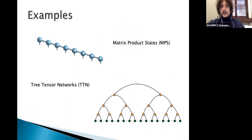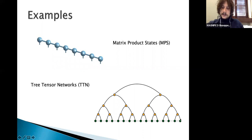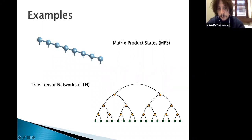A possible generalization is the tree tensor network (TTN), where you construct a binary tree on top of your physical lattice by connecting two nearest-neighbor sites to a layer of top tensors, then connecting that layer to additional layers, and so on up to the final highest layer of the tree. These are very powerful for capturing long-range correlations, better than MPS, especially when the Hamiltonian contains long-range interactions between different parts of the system.